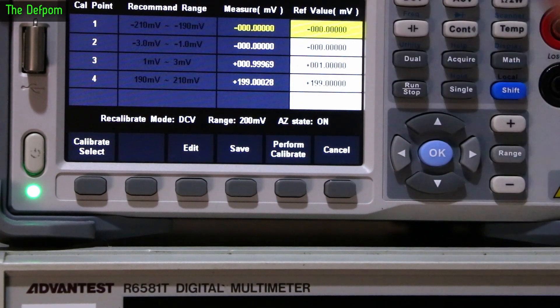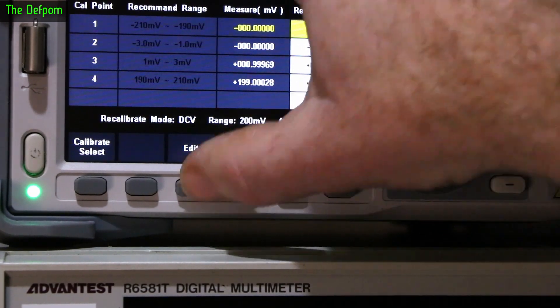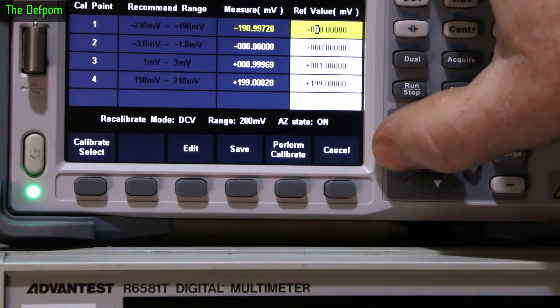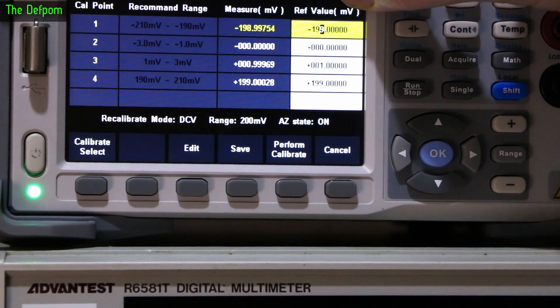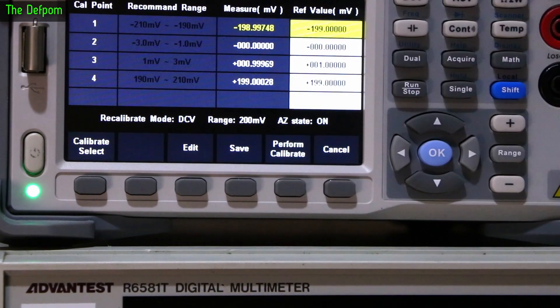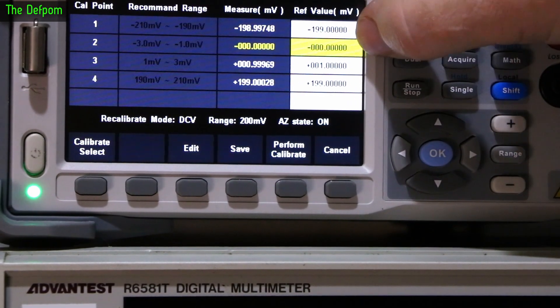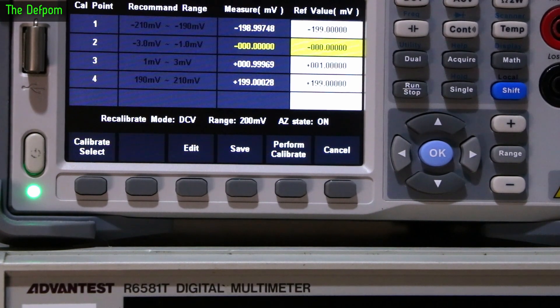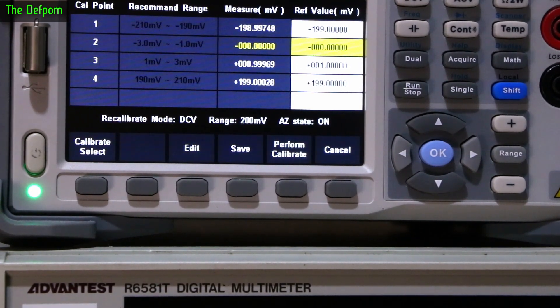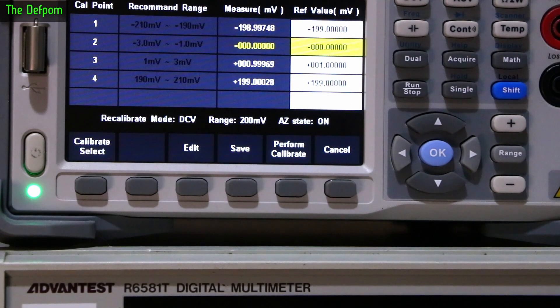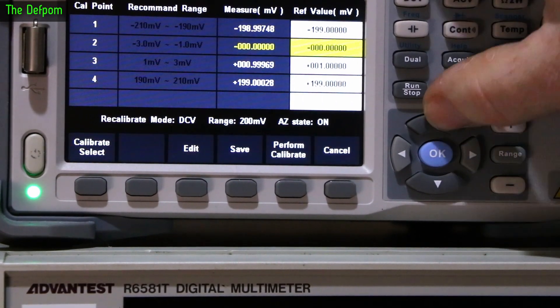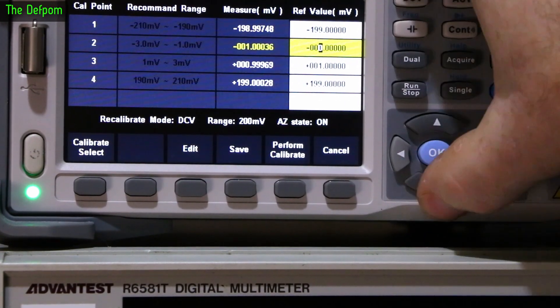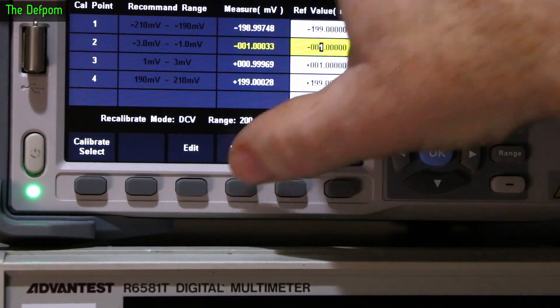We'll come down and do the other end of the scale. It's still stabilized. We can do negative 200. That's minus 199, exactly what we've got on the Advantest. Save that one. Then we'll do the minus one millivolt range. Every time I change the setting on the calibrator, I need to give it a chance to stabilize. Things have to reach an equilibrium. That's now doing minus one millivolt exactly. So we can adjust that one. Save.